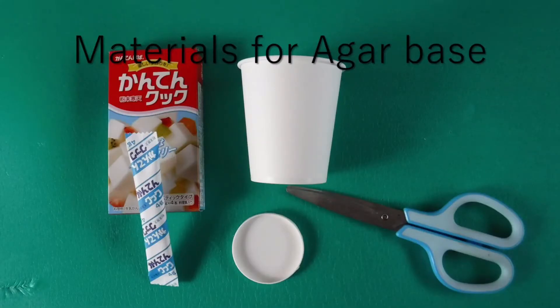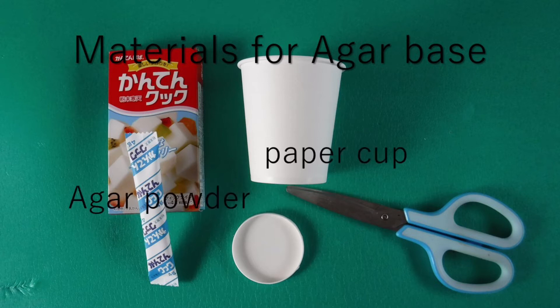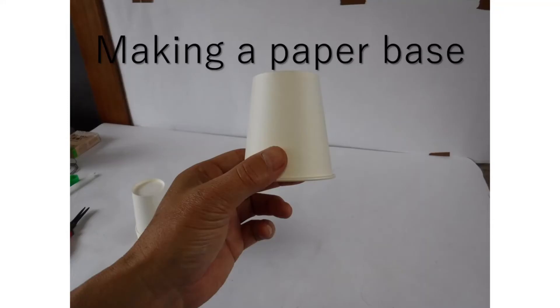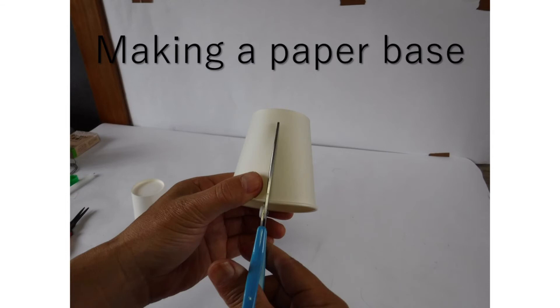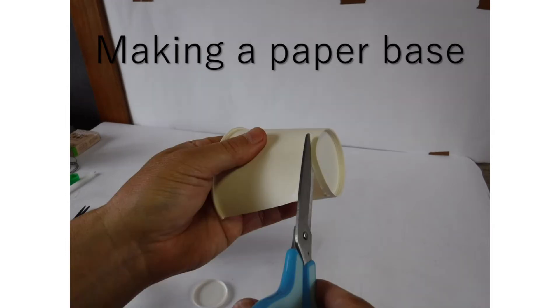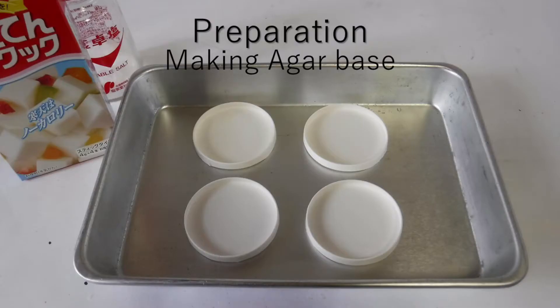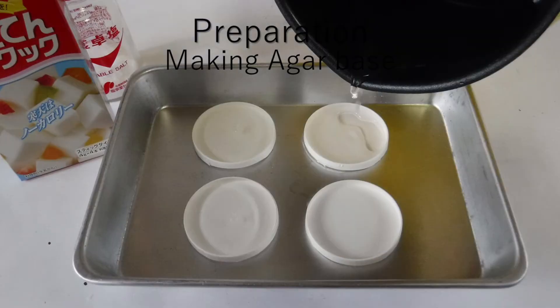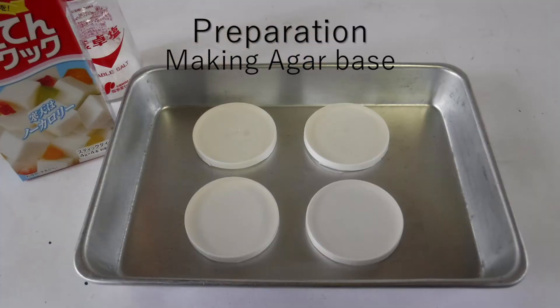This experiment uses an agar base and agar powder, and a paper cup is needed for making the base. Let's make a paper base by using the bottom part of a paper cup. Dissolve the agar powder in water and boil it, and pour it in the paper base.